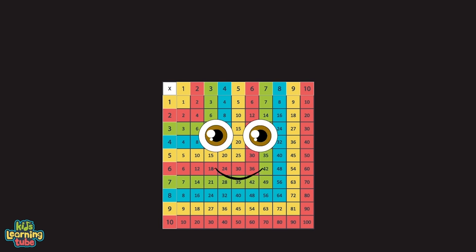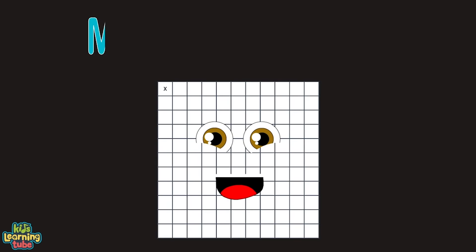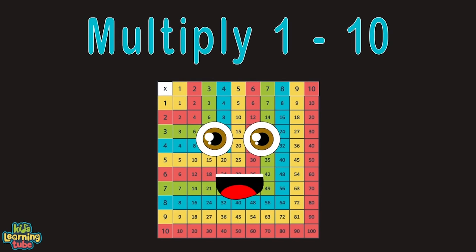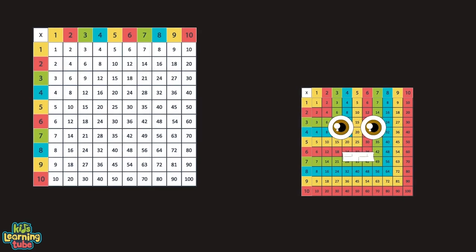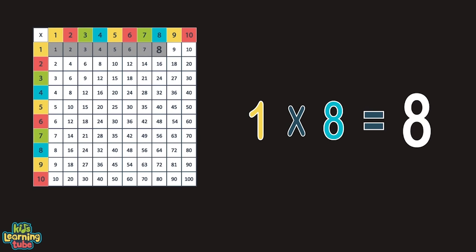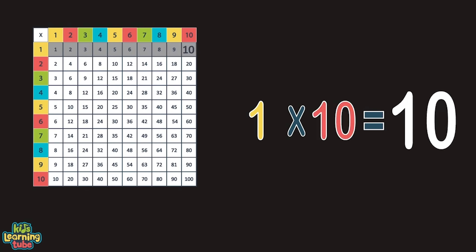Let's multiply one through ten. We'll be smarter by the end and then we can start over again. Let's multiply one through ten. Math is so easy when you focus. Let's understand how numbers blend. Let's start by counting by one. Here we go now: one, two, three, four, five, six, seven, eight, nine, ten.